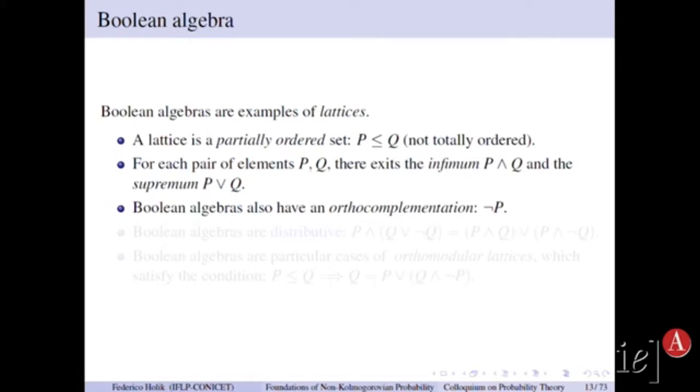So summarizing, we have a system and we have outcomes of the system and we have propositions that we can make and empirically test about the outcomes of the experiment that we made on the system.